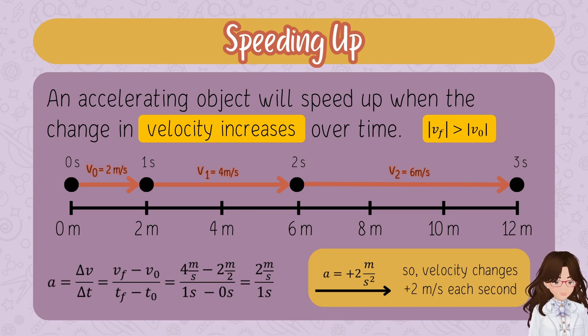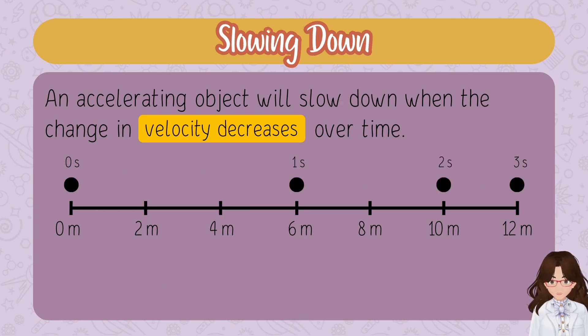Let's look at an example of slowing down. An object is slowing down when the final velocity or magnitude of the final velocity is less than the initial velocity. Notice this is not constant motion—there's definitely acceleration because the dots are not equally spaced apart. They start farther apart and get closer together, so we're looking at an object that is slowing down.